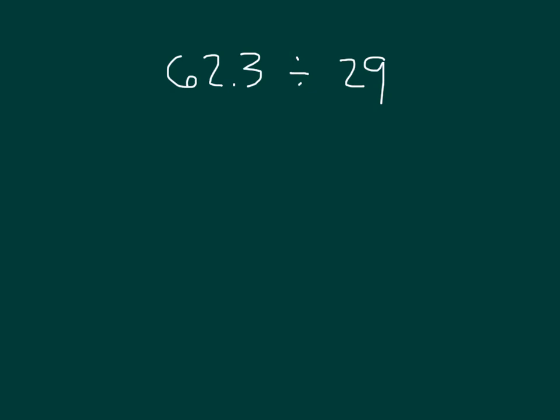So if we estimate that divisor, 29 is close to 30. And what divided by 30? What can we divide by 30 that's close to 62.3, or 62 and 3 tenths? Right, 60. And so 60 divided by 30 is equal to 2, because 2 times 30 is equal to 60. So 62 and 3 tenths divided by 29, the approximate answer is 2.